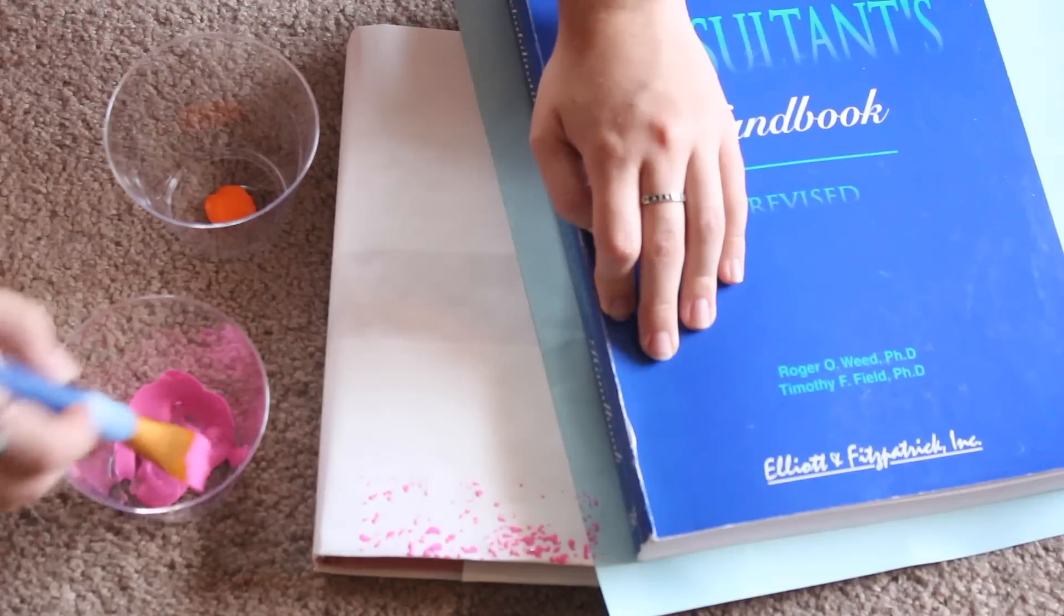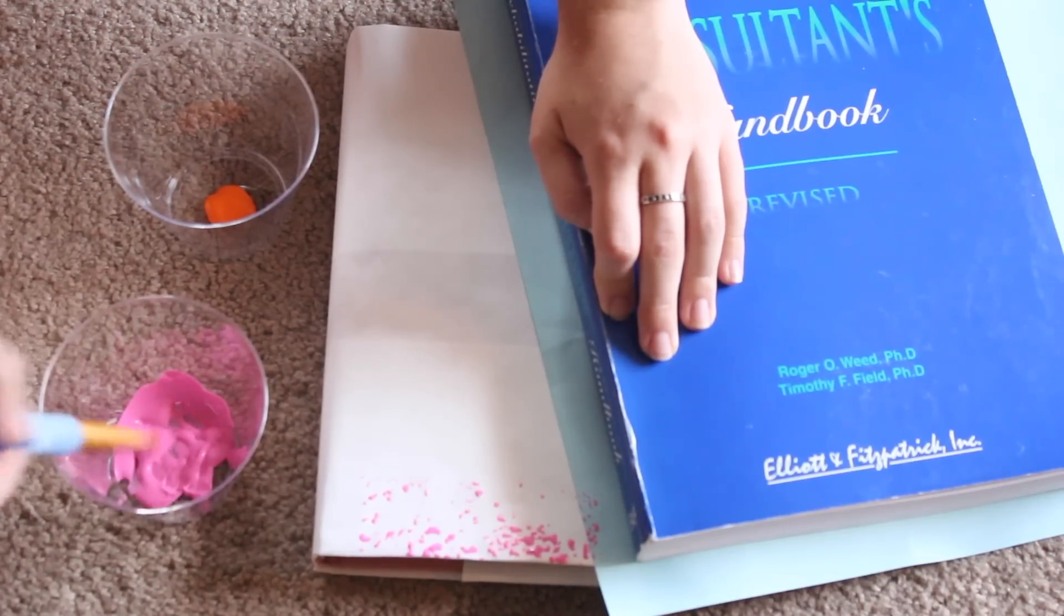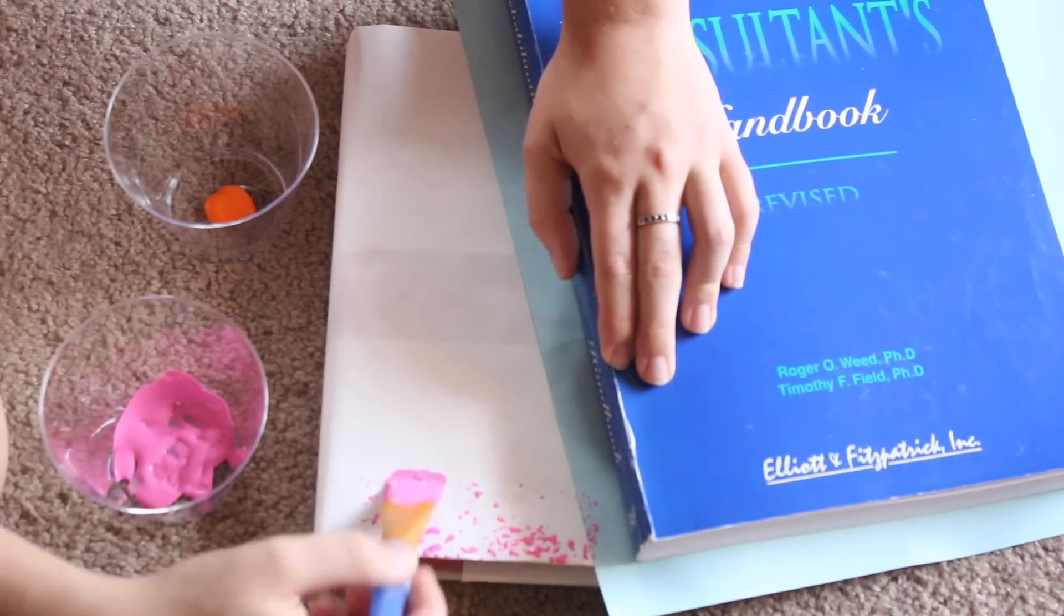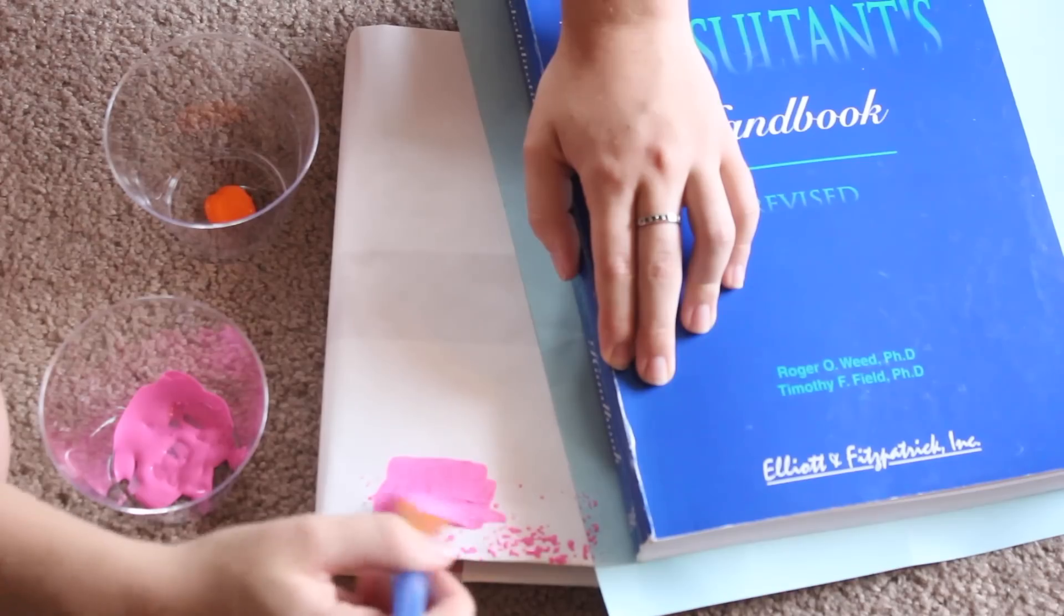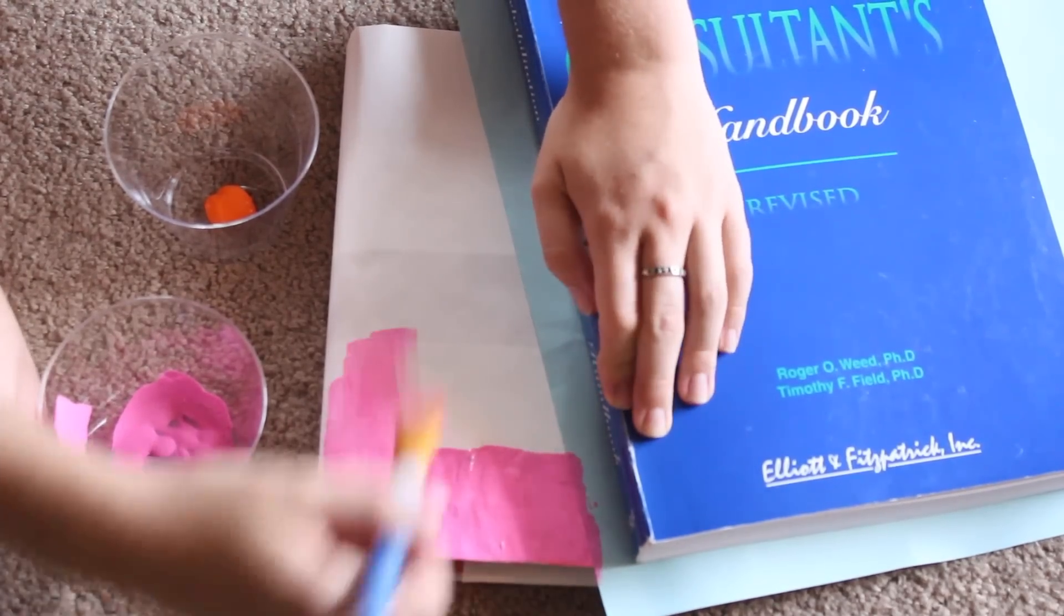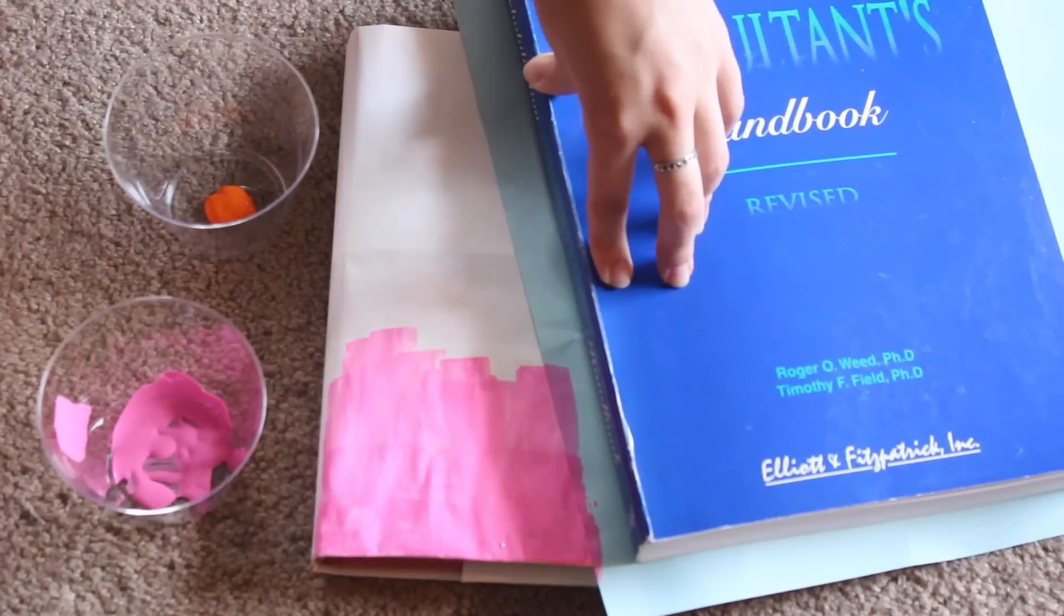And then you're just going to take your paint colors on a paint brush and just start randomly brushing the colors on. And the reason why we have that paper there is because it's going to help create a nice line. So it's sort of going to cut off the color where you put it there.